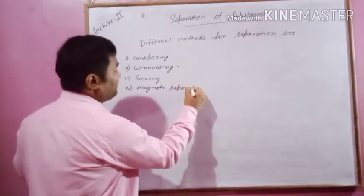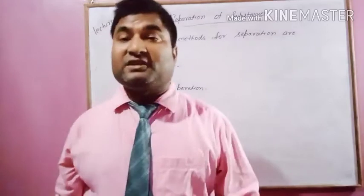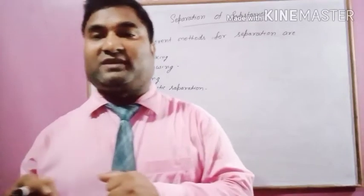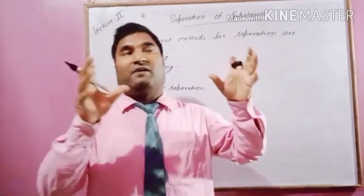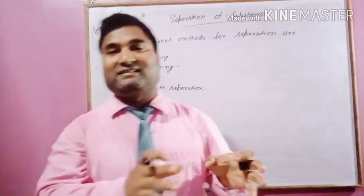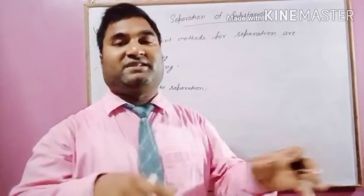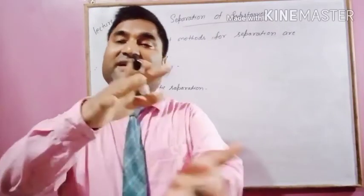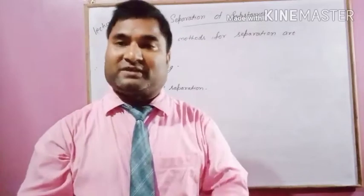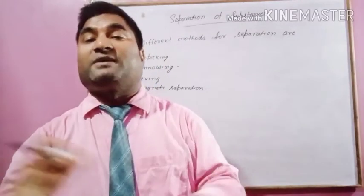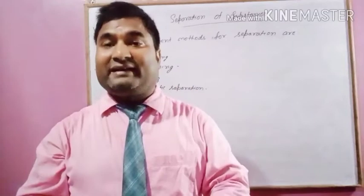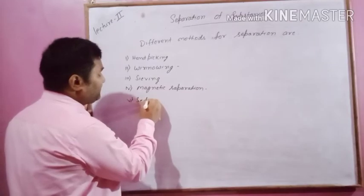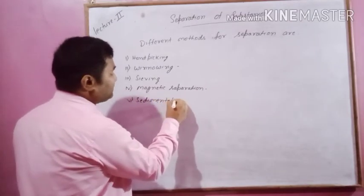The fourth method is magnetic separation. It is the method of separating magnetic substances from non-magnetic substances. For example, iron pieces are magnetic and attracted by a magnet. If you place a magnet over the mixture, all magnetic substances get stuck to the magnet and the non-magnetic substances remain behind.